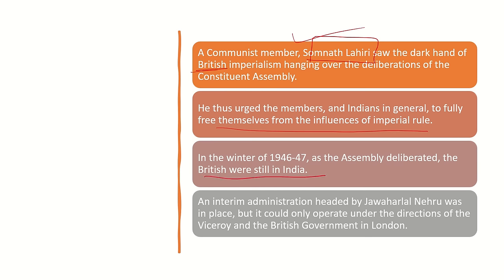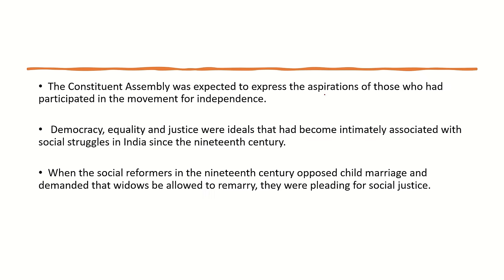The Assembly deliberated while the British were still in India. An Interim Administration headed by Jawaharlal Nehru was in place, but the administrators still worked under the Viceroy and the British government in London. The Assembly was expected to fulfill the aspirations of many people who were waiting for freedom — aspirations of democracy, equality, and justice for every human being.